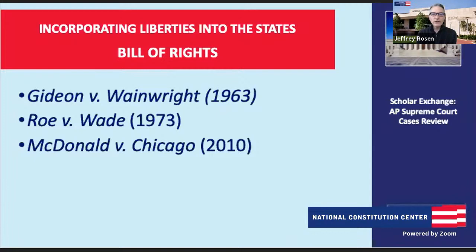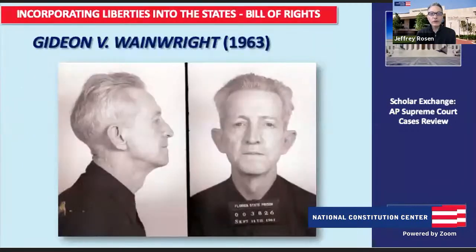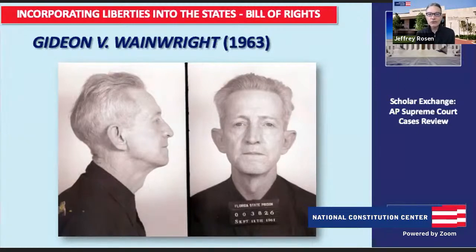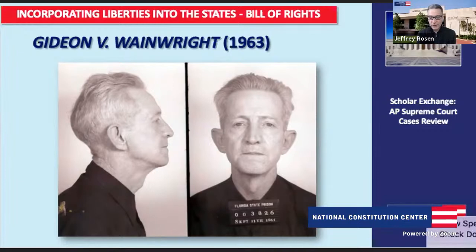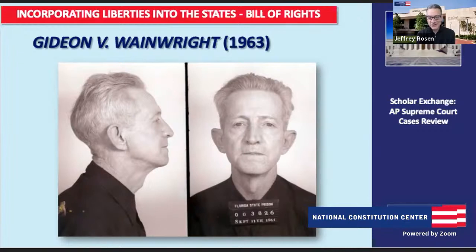Gideon v. Wainwright is one of those incorporated provisions — the Sixth Amendment right to counsel and to a court-appointed lawyer if you can't afford one. Clarence Gideon was tried in a Florida state court on a felony charge and hand-wrote a petition to the Supreme Court saying he was entitled to a lawyer. The court agreed, and having been wrongly convicted while representing himself at an alleged pool hall break-in, Gideon was acquitted the second time because he had a good lawyer. The book 'Gideon's Trumpet' by Anthony Lewis tells this story powerfully.